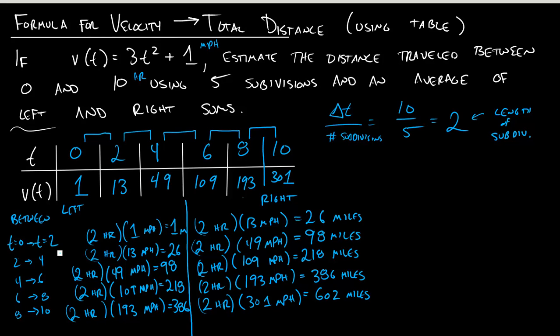Now, if I want to get my total estimates, so using my left, I can add all these up to say that using my left estimates, it's going to estimate that my total distance traveled over those 10 hours was 729 miles total. If I do that with my right estimates, it's going to tell me that my total distance traveled over those 10 hours was a total of 1,330 miles.